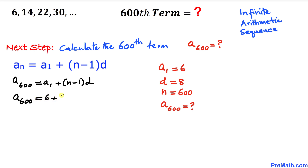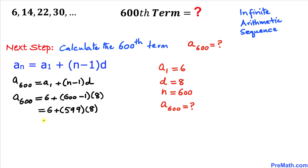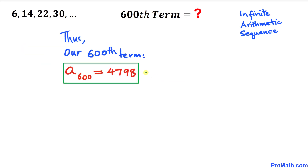So a of 600 equals 6 plus (600 minus 1) times 8. In the next step, 600 minus 1 gives us 599. Simplifying further, 599 times 8 gives us 4792. Adding all the numbers together gives us 4798. So our 600th term is 4798.